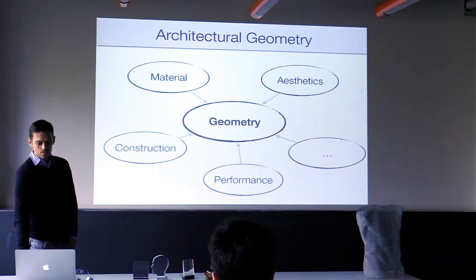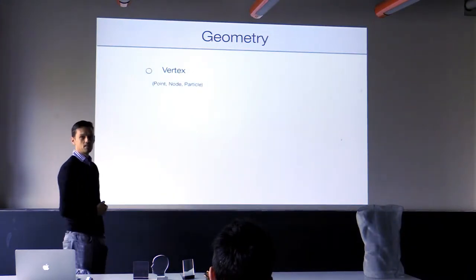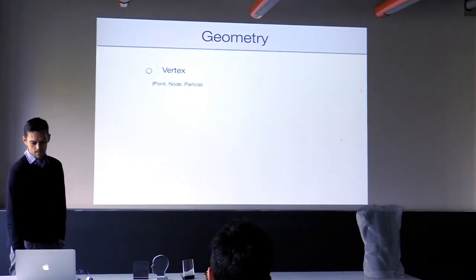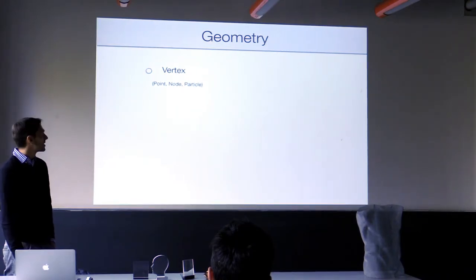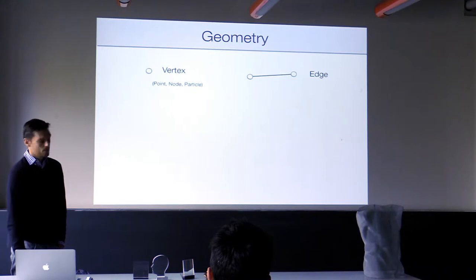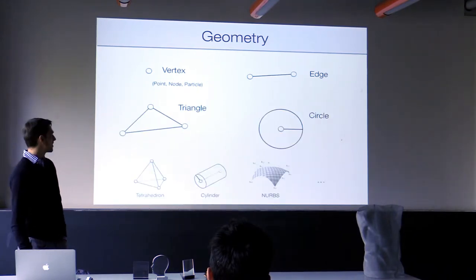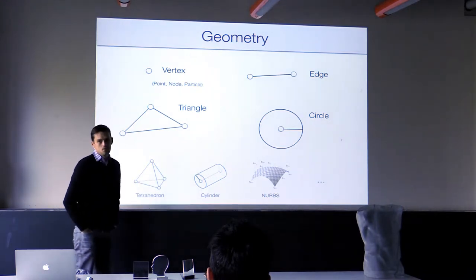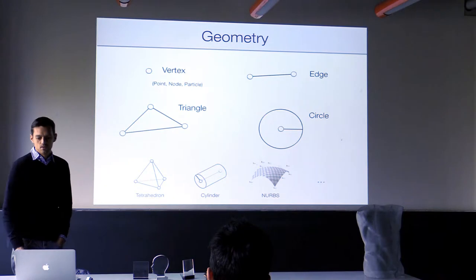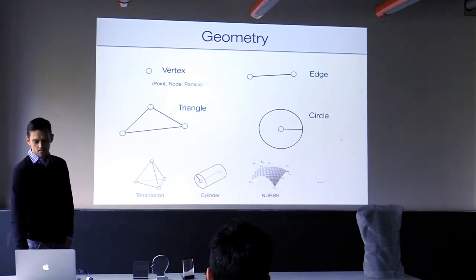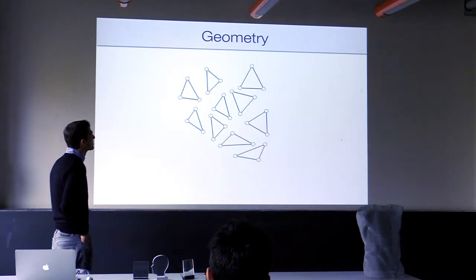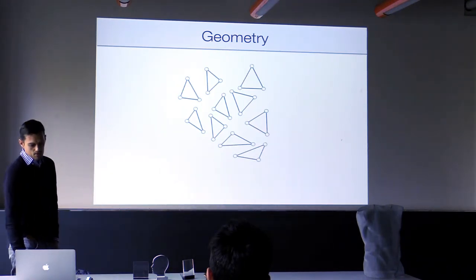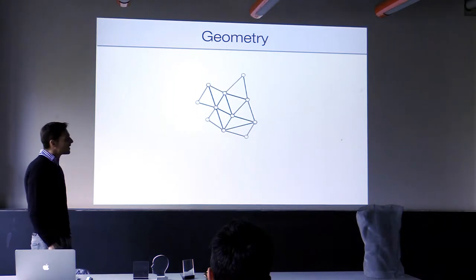How do we create geometry? We start with simple building blocks. The most simple piece of geometry is a point — I can also call it a vertex, node, or particle depending on context. Another primitive is an edge connecting two points, or a triangle, or maybe a circle. Designing something more complex is putting these primitives together in the right way. Often we deal with ensembles of these primitives that define a more global structure.